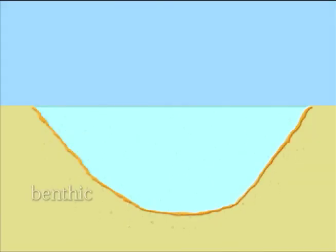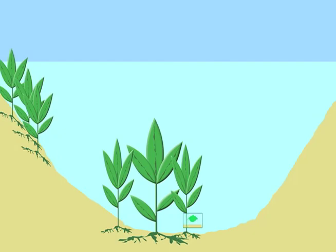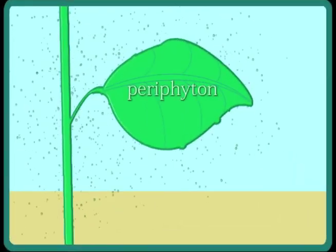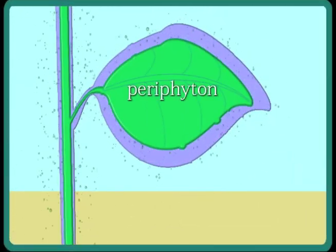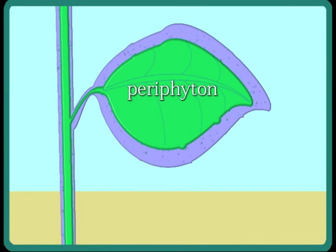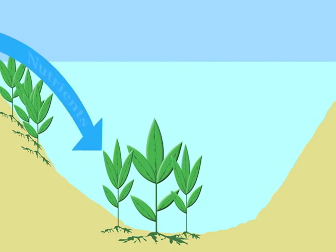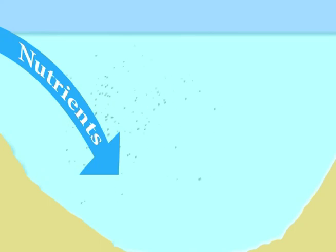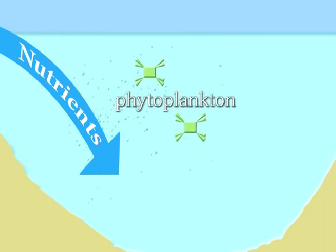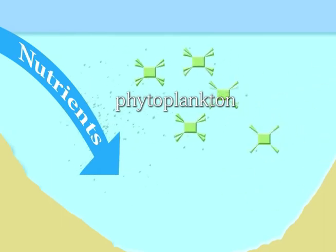In the first scenario, the benthic algae layer takes up the nutrients coming up from diffusion on the bottom. In the second scenario, the exudates are taken up by the periphyton that will grow on the plants. As nutrients start to come into our ponds from outside sources like runoff, there is now an abundant source of food for the phytoplankton suspended in the water column. It now has a source to thrive, and this is where we will start to see nutrient overload.